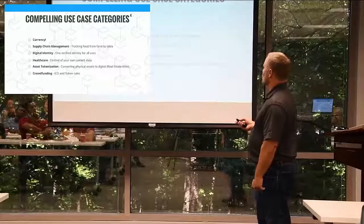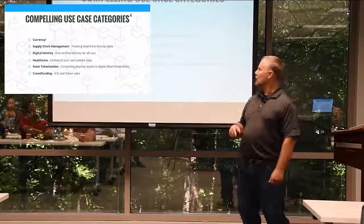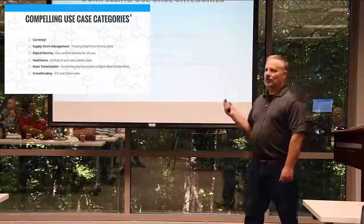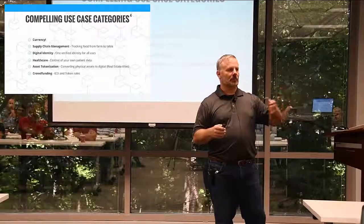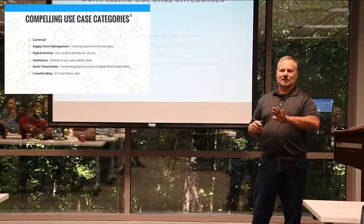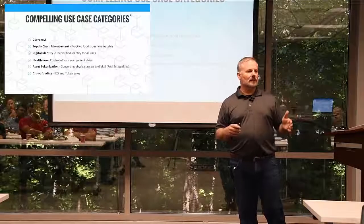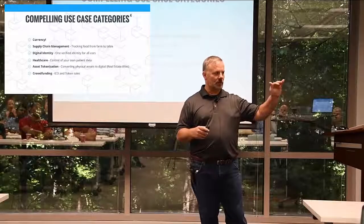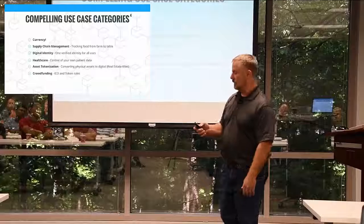Let's talk about some compelling use cases. Currency is the obvious one — how it plays in financial systems and the ability to transfer money. Supply chain has a lot of energy around it. IBM has a commercial about tracking an apple into applesauce all the way through the supply chain. The garbage-in garbage-out caveat still applies — you need certification of the IoT network being used to publish timestamps and fingerprints to the blockchain. If you can't keep that piece from being corrupt, the purpose of the blockchain is defeated.